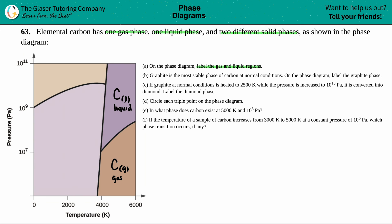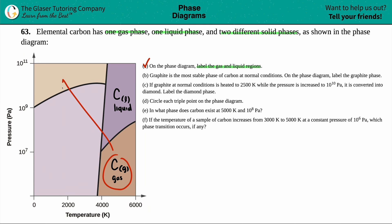That checks out for letter a. The top-left region has no direct connection to the gas, so that's not the liquid — the liquid is the region with that direct gas connection. Letter b is next.